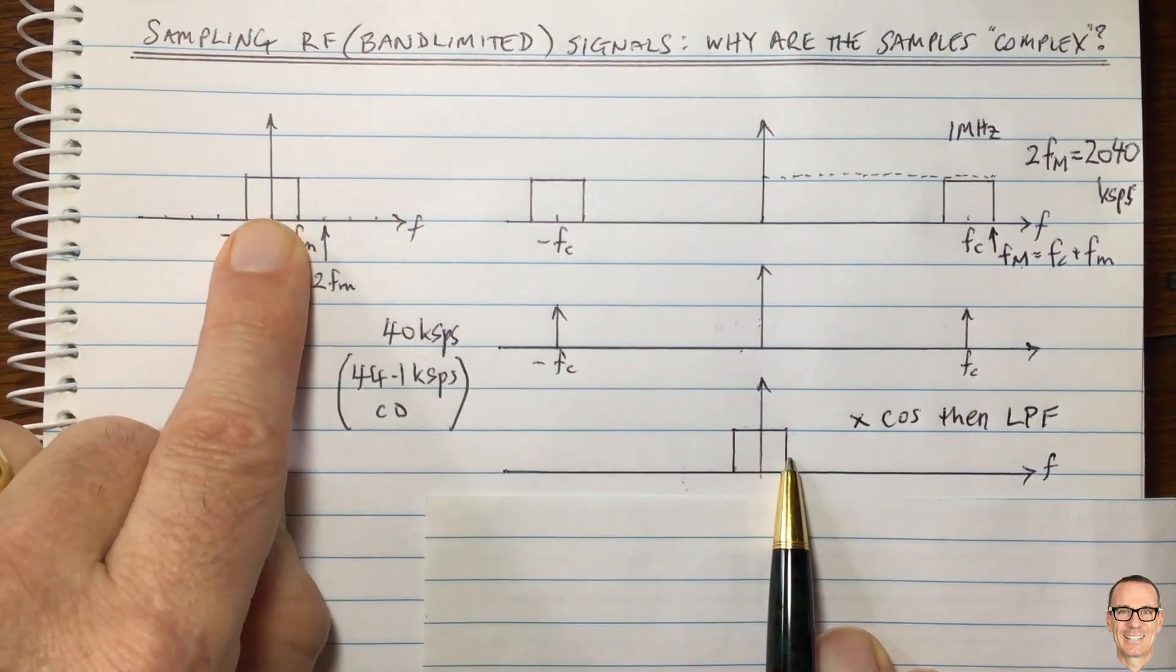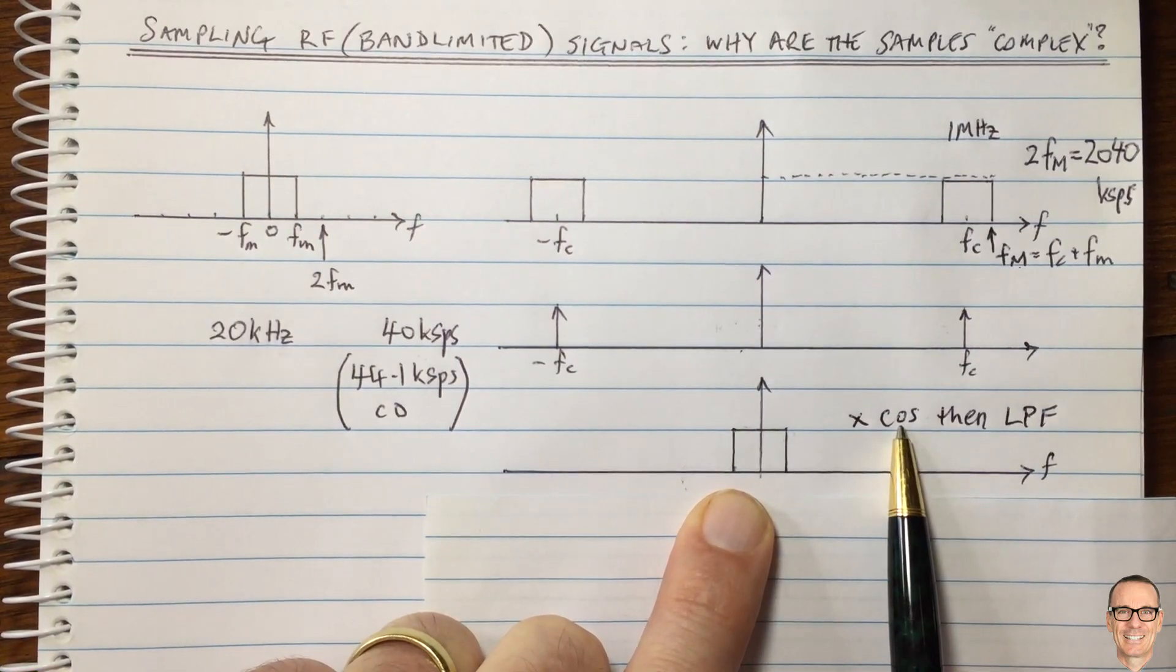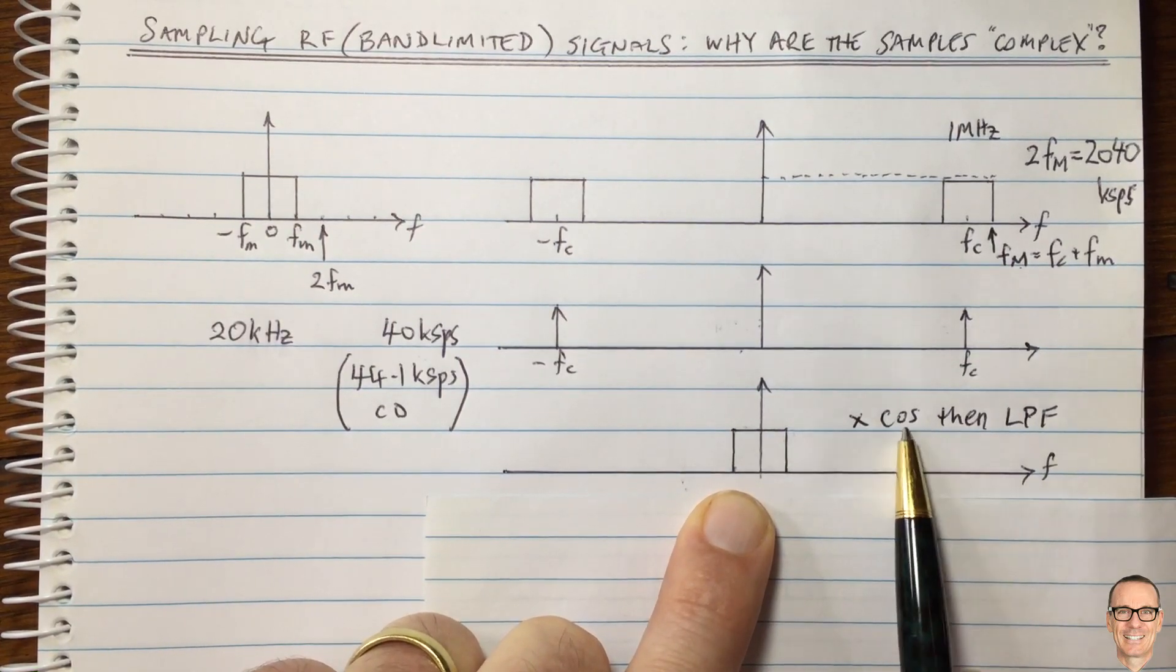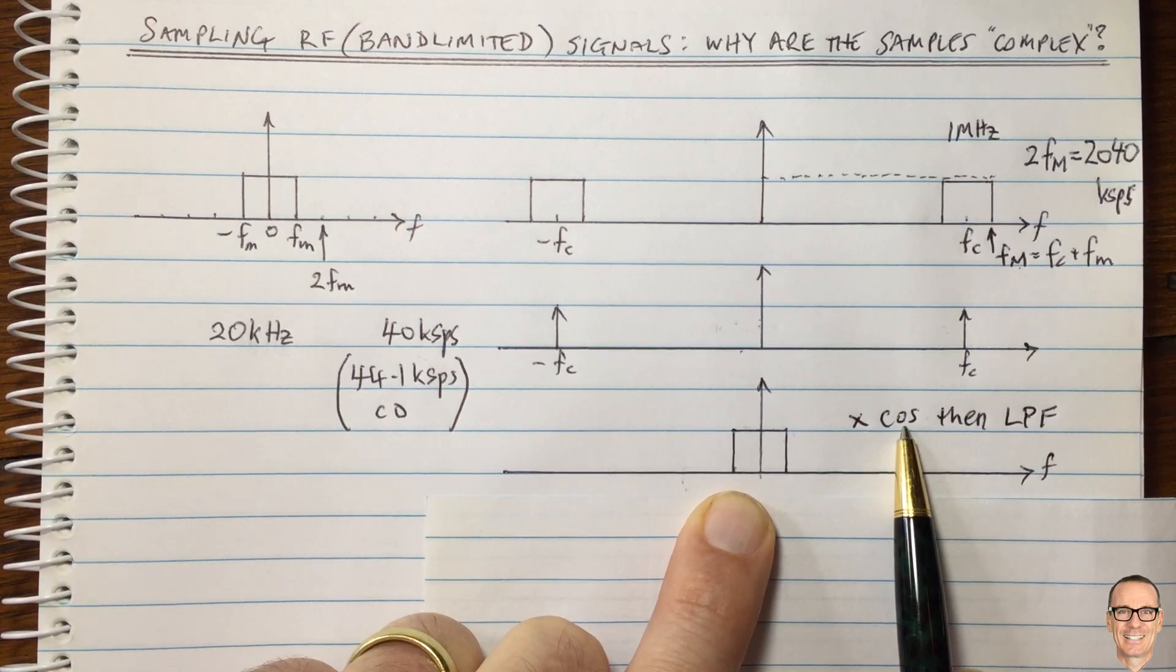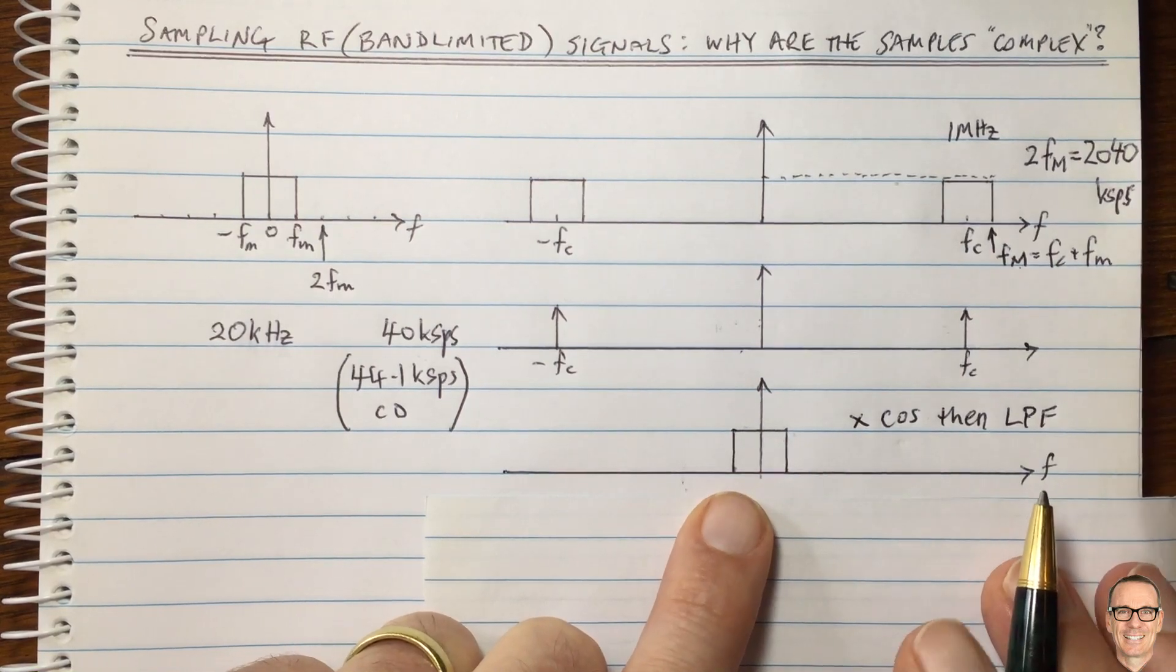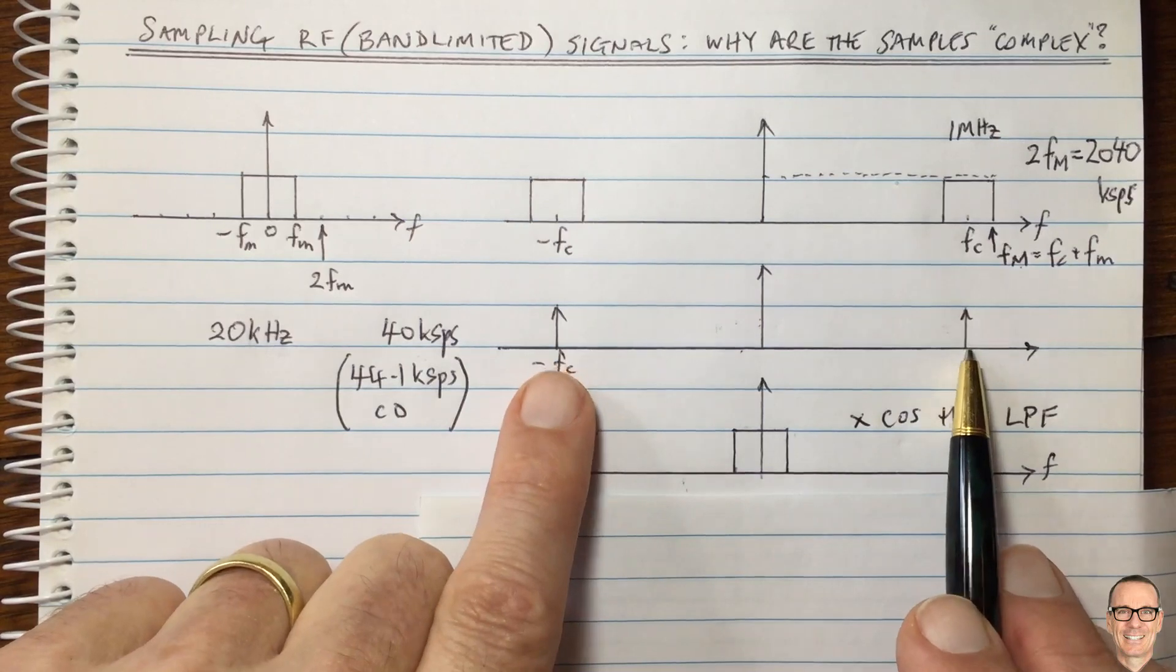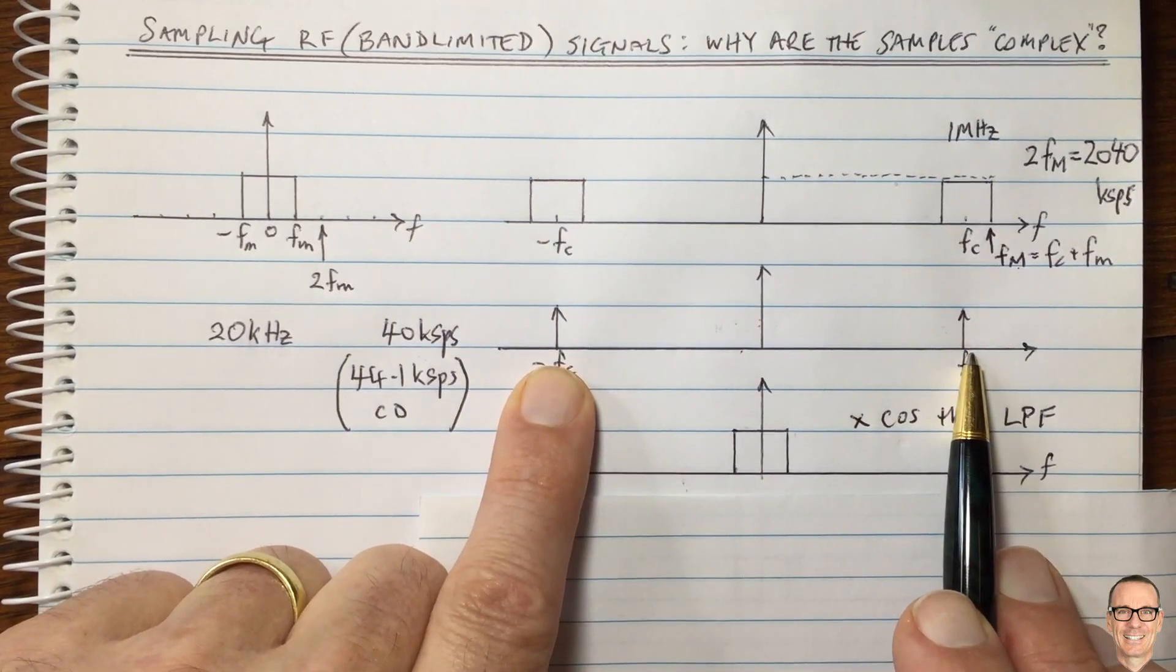Now, this signal looks more like the original signal. But we've got to remember that the cos waveform has an orthogonal waveform, which is at the same frequency, but is orthogonal. And that is the sinusoidal waveform.